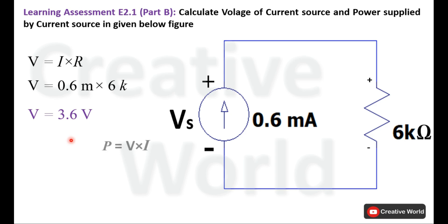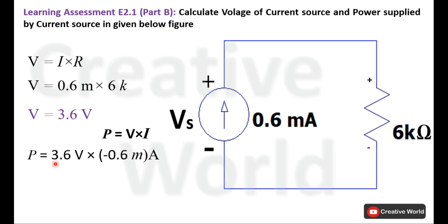Now calculate the power of this constant current source using the basic formula of power, which is the product of voltage and current. We know the values of voltage and current for this element. The current is entering from the negative terminal of this constant current source and leaving from the positive terminal, so this current will be taken with a minus sign. Therefore, the power of the constant current source is minus 2.16 milliwatt.